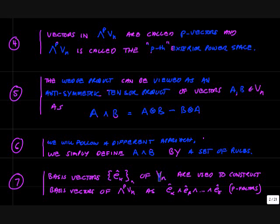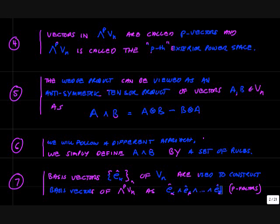Let's take a look at the basis vectors of Vn. We're going to have a set of n vectors labeled E sub k — the usual way of looking at a basis set of Vn. These basis vectors of Vn are used to construct basis vectors of an exterior power space. The basis vectors for the p exterior power space are obtained by taking wedge products of elements of the basis of Vn. We'll show how all this comes about, quickly covering some of the highlights here at the beginning.